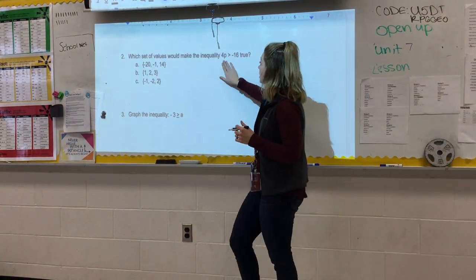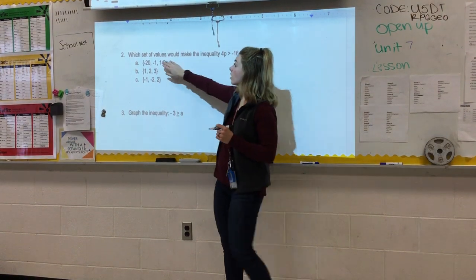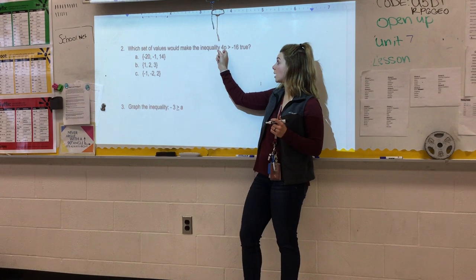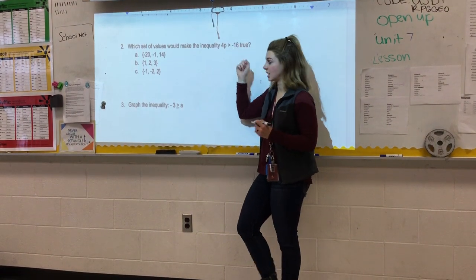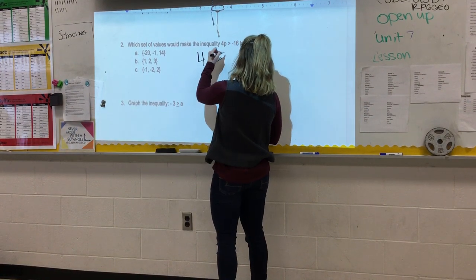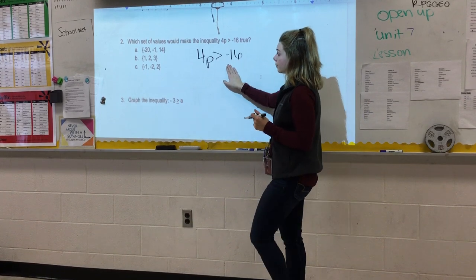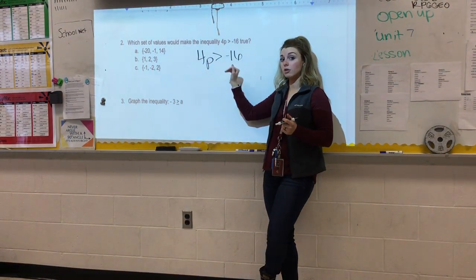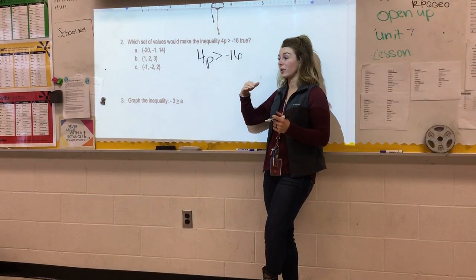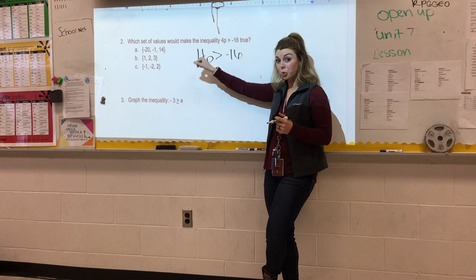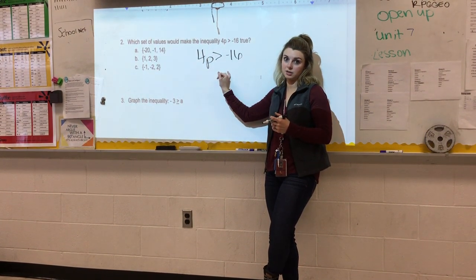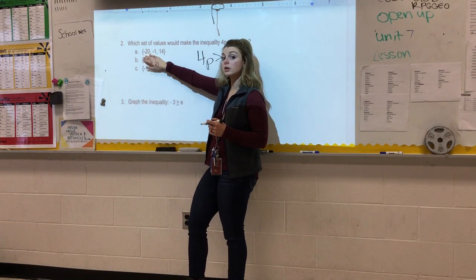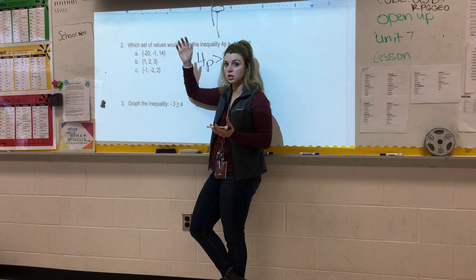So let's go ahead and look at the next one. The next one is going to have the same idea. It says which set of values would make the inequality 4p greater than negative 16. So we know that 4 times something has to be greater than negative 16. 4 is already greater than negative 16 because that's just like what we've been learning about for a couple weeks. Any time, if you have $4 in the bank, it's not great, but it's way better than owing the bank $16. So we know 4 is already greater. So let's go ahead and look at our first one.